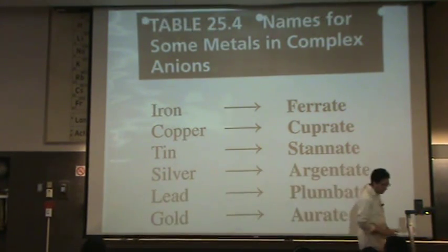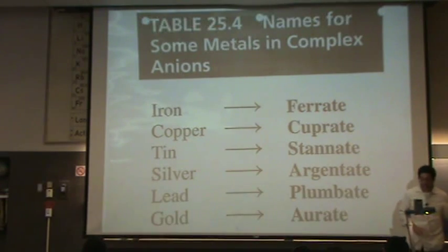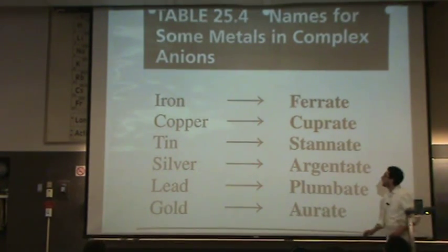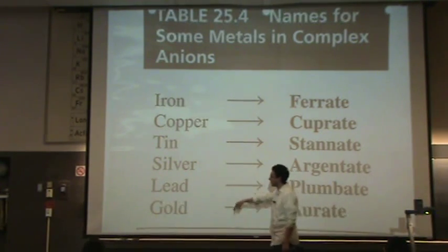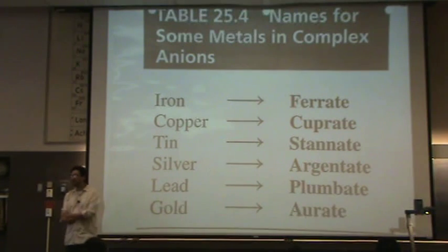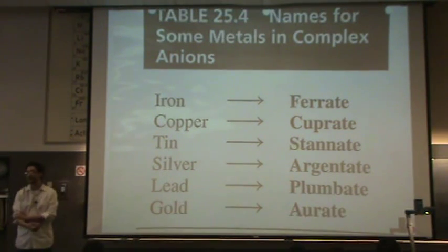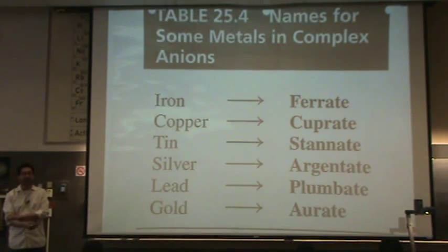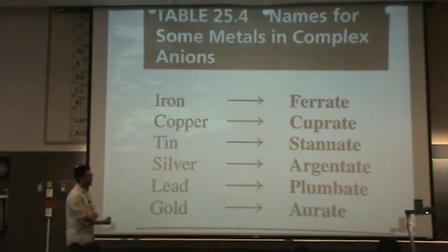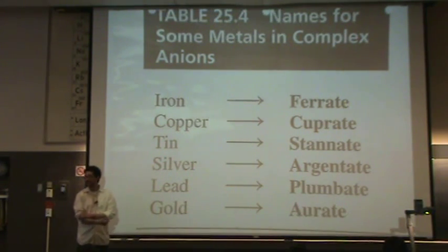You need to know only these six names, and this is in your text. Iron, copper, tin, silver, lead, and gold have Latin equivalents that you sometimes, but not always, use. These Latin equivalents must be used when they need to be used. There are certain times, and I'll teach you when, that they need to be used, and you must use them at those times.